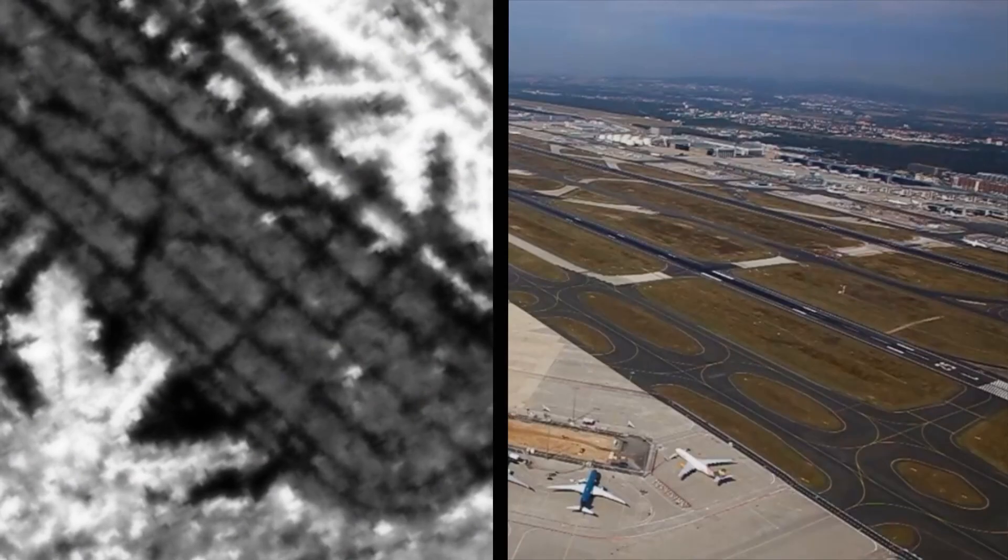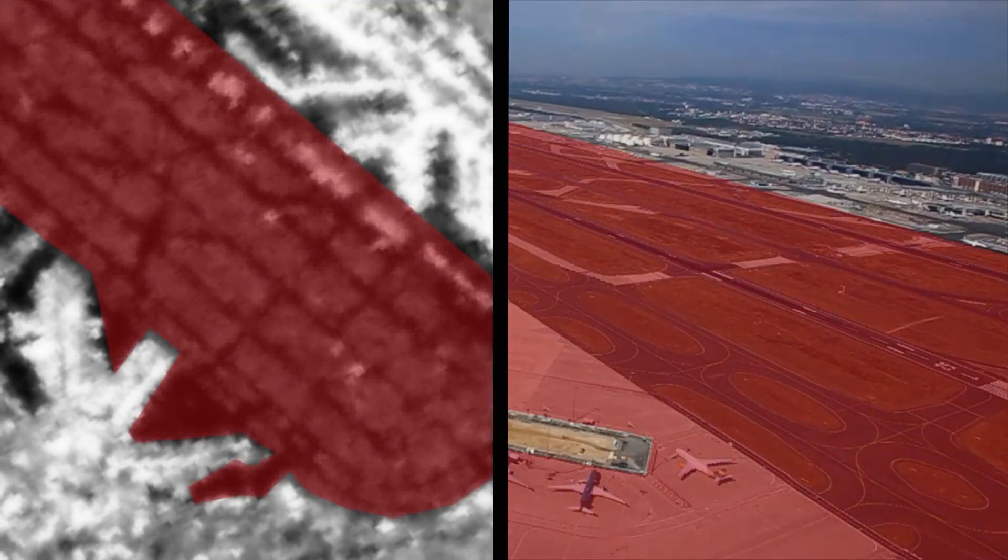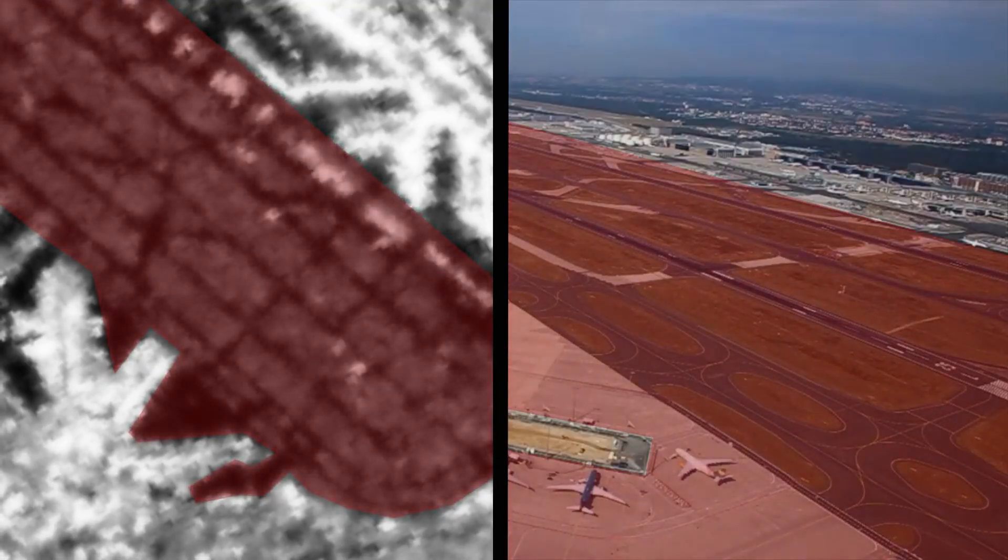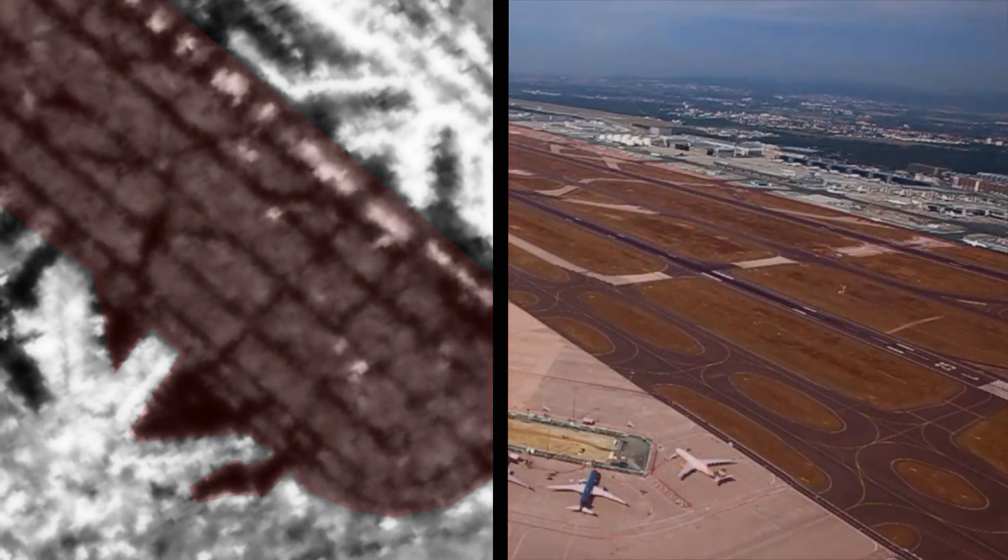This can be clearly seen on the smooth, asphalted runways, which in reality vary in brightness. In the radar image, they appear almost uniformly dark.